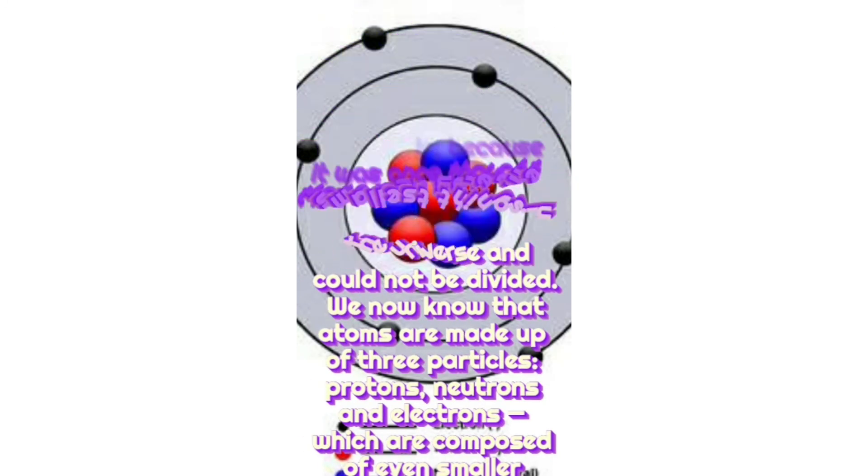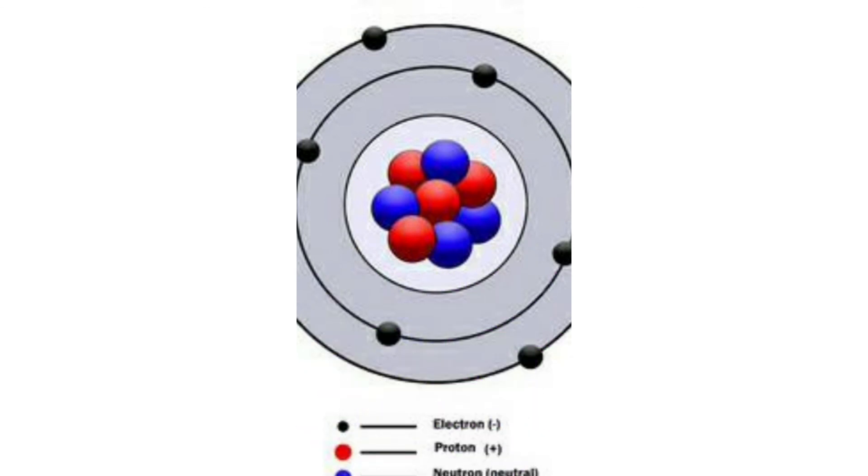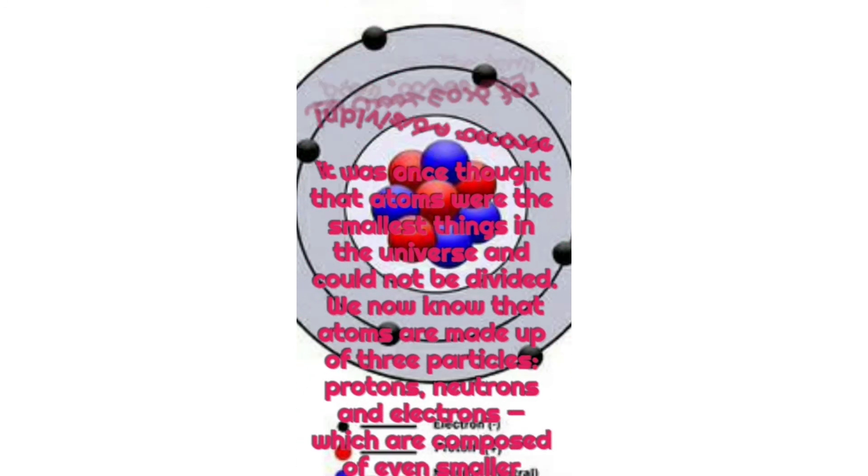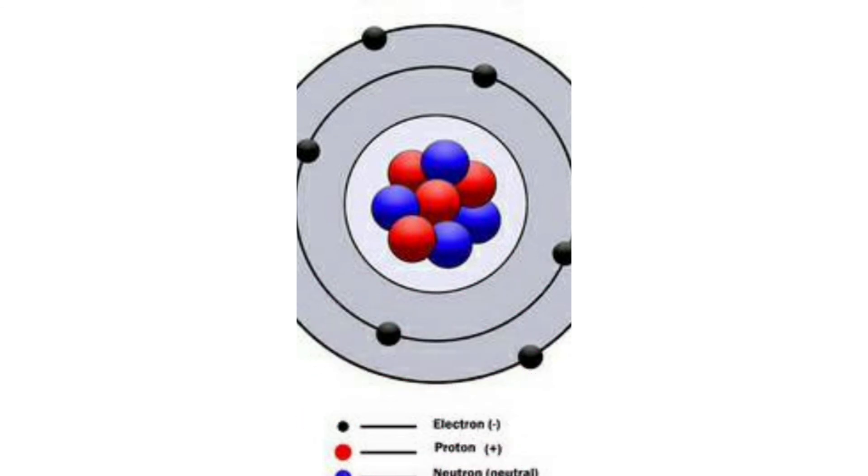What is atom? An atom is the smallest unit of ordinary matter that forms a chemical element. Every solid, liquid, gas and plasma is composed of neutral or ionized atoms. Atoms are extremely small, typically around 100 picometer across. In the last chapter, we discussed about matter. Anything that occupies space and has its mass is called matter. So atoms are the smallest unit. They are so small that accurately predicting their behavior...